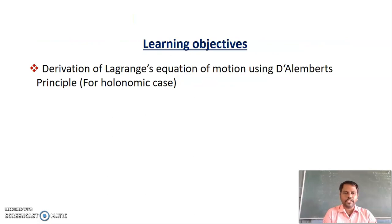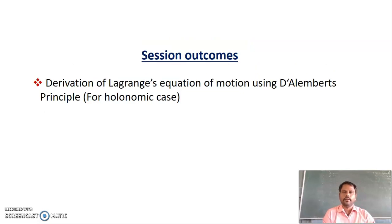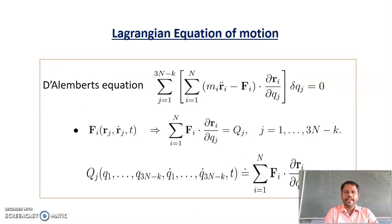The main objective of this session is to derive the Lagrangian equation of motion using D'Alembert's principle. Note this is for the autonomic case. By the end of this session we will know how to derive the Lagrangian equation of motion and the Lagrangian equation. Let's begin the derivation of the Lagrangian equation.